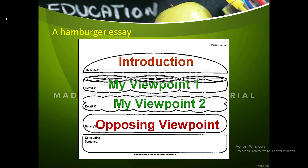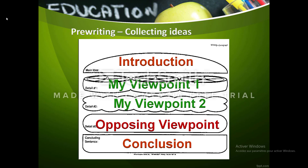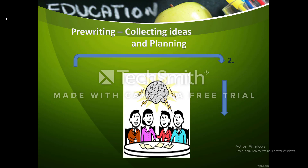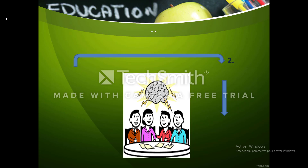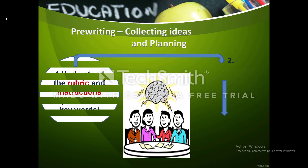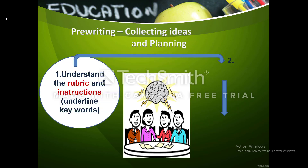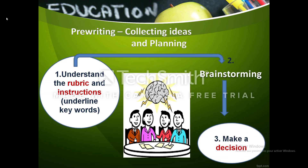The last part is the conclusion — it's the bottom bun. It's where we summarize the main points and end with a strong statement. Every stage of writing implies free writing: you understand the rubric and instructions, identify the keywords, then brainstorm, and finally make a decision.